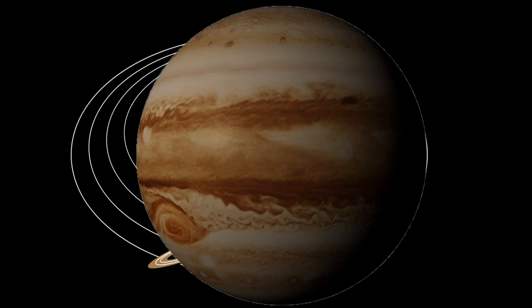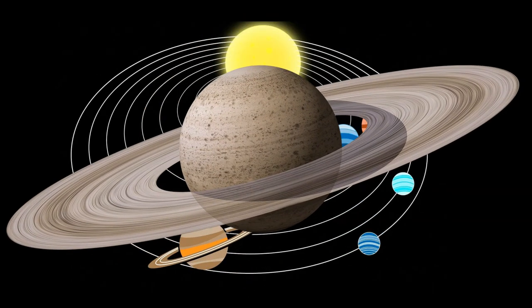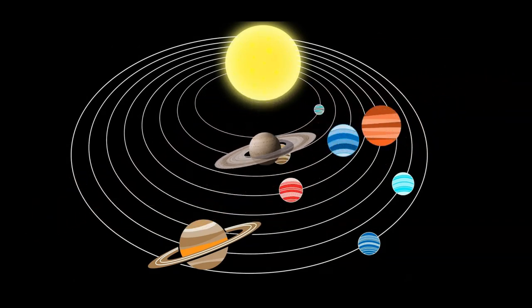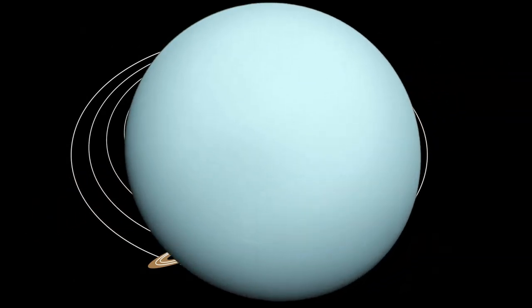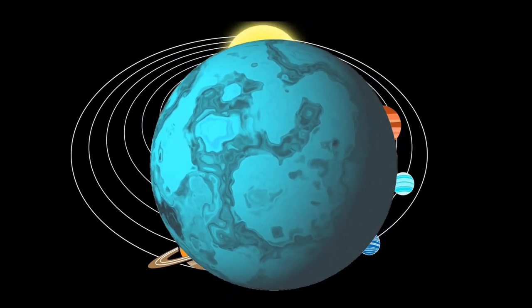Fifth is Jupiter, the largest that we know. Sixth is Saturn, famous for his rings. Seventh is Uranus, he spins on his side. Eighth is Neptune, he's blue and super fine.